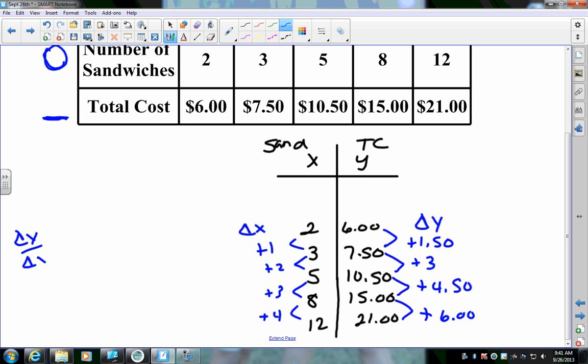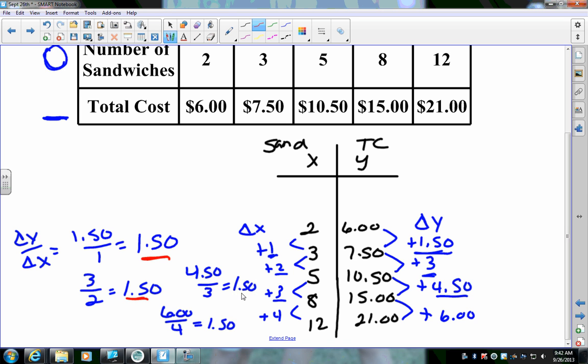Well, when I do delta y over delta x, I have, in the first one, I have $1.50 divided by 1. The $1.50 divided by 1 is $1.50. The next one says 3 divided by 2. $1.50. $4.50 divided by 3, that's $1.50. And then again, $6.00 divided by 4 is $1.50. All of these are the same, so that means that it is linear, right? So, my rate of change, my rate of change is $1.50. Now, am I, is it positive or negative? It's positive because I'm going up. As I'm going up, I'm adding.